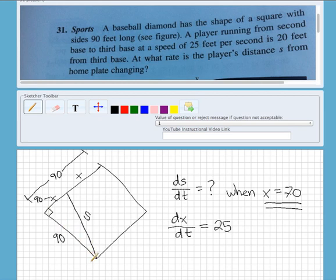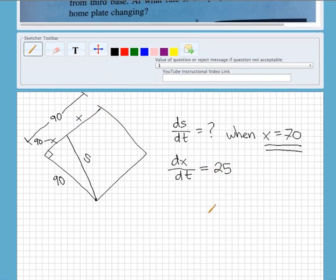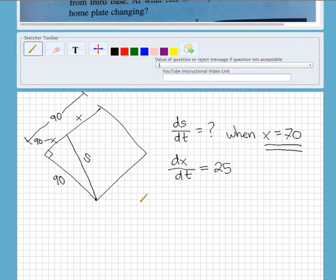This 90 here is not changing, it's always 90, so we can leave that as 90. So they're asking us for ds/dt when X equals 70, and they give us dx/dt. In other words, the runner here is traveling at 25 feet per second.